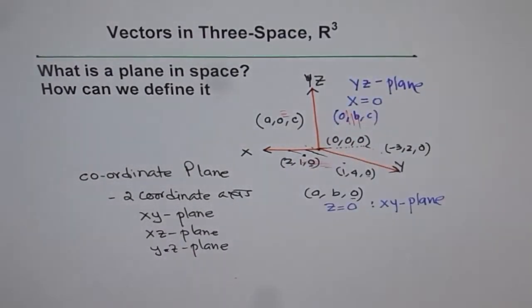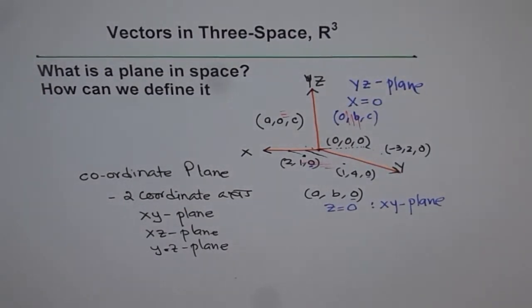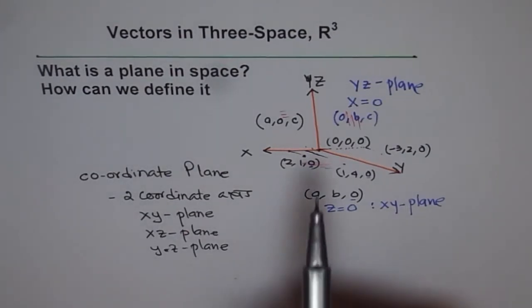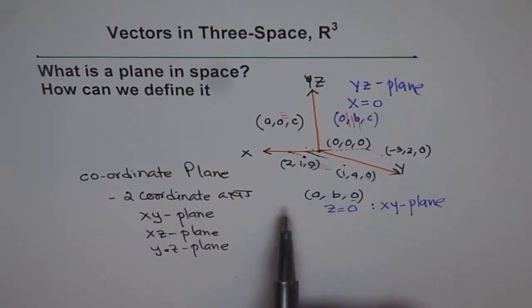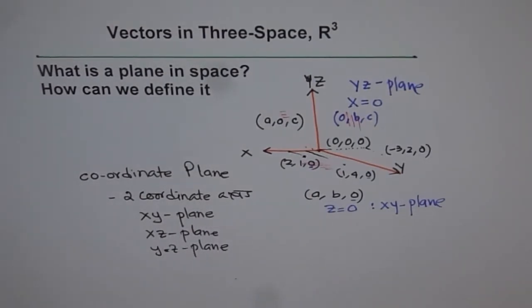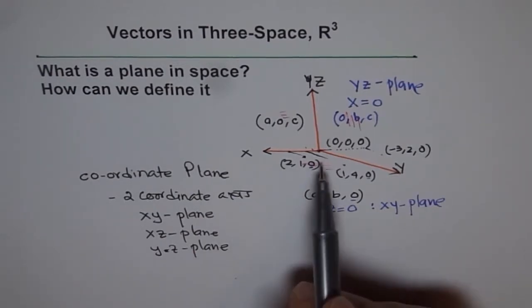So this is a way to define the planes. I hope you understand and appreciate this concept. So each plane has two coordinate axes associated with it and the movement in the third is zero. And then we get these three basic coordinate planes. Do you understand? We can have many planes parallel to them.